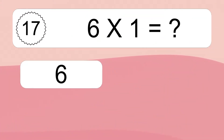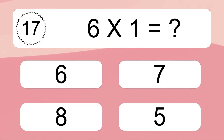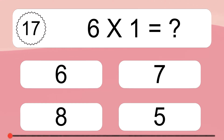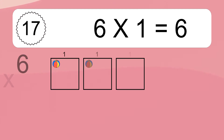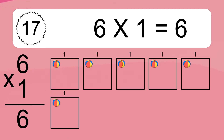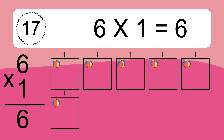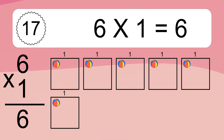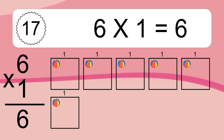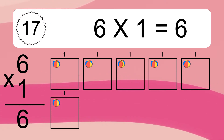Six times one equals six. We have six boxes, and each box has one colorful ball inside. If you count all the balls in all the boxes together, you will have six times one balls. This equals six balls.